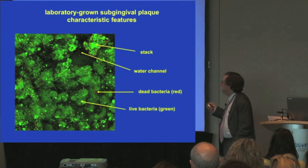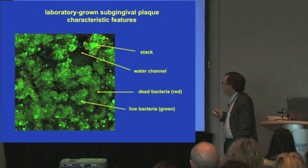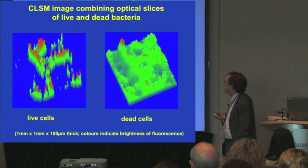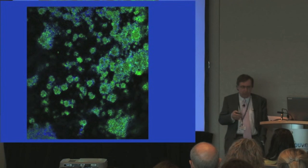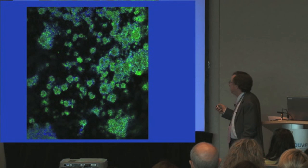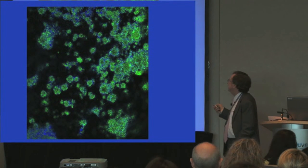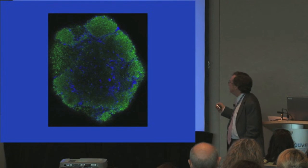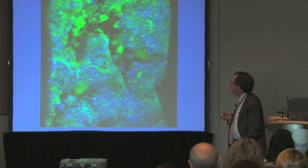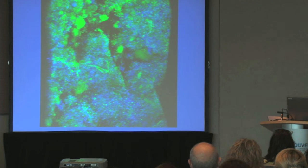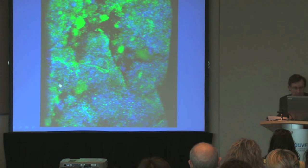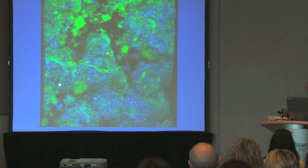Here we see the stacks, this is the water channel, and we've stained this with the live-dead stain — bacteria that are live are green and bacteria that are dead are red. This composite image shows the distribution of live and dead bacteria in these plaques. One of my postdocs suffered from red-green colour blindness, so he had to use green and blue as stains — green for live bacteria and blue for the dead. This is a close-up image of one of these stacks showing the green live bacteria and blue dead bacteria. And here's a movie showing the stacks and water channels quite clearly.